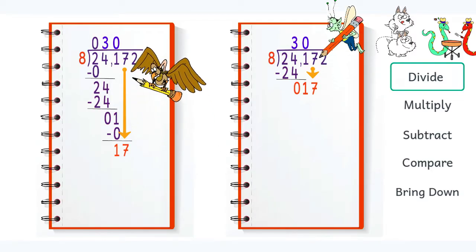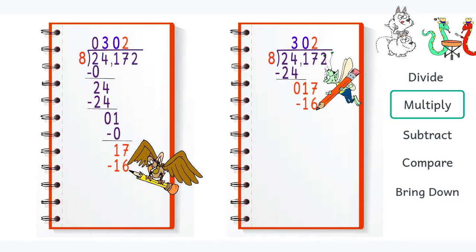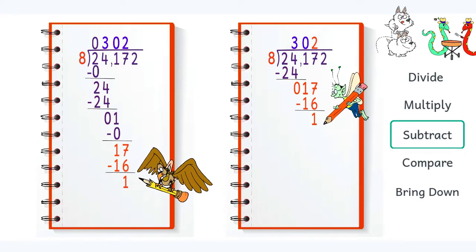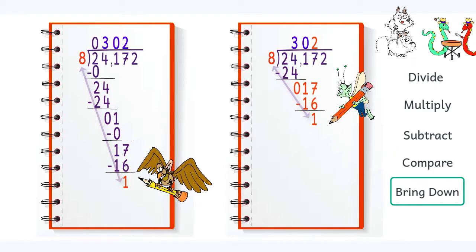Eight goes into seventeen two times. Two times eight is sixteen. Seventeen minus sixteen is one. One is less than eight, so we bring down the number two.